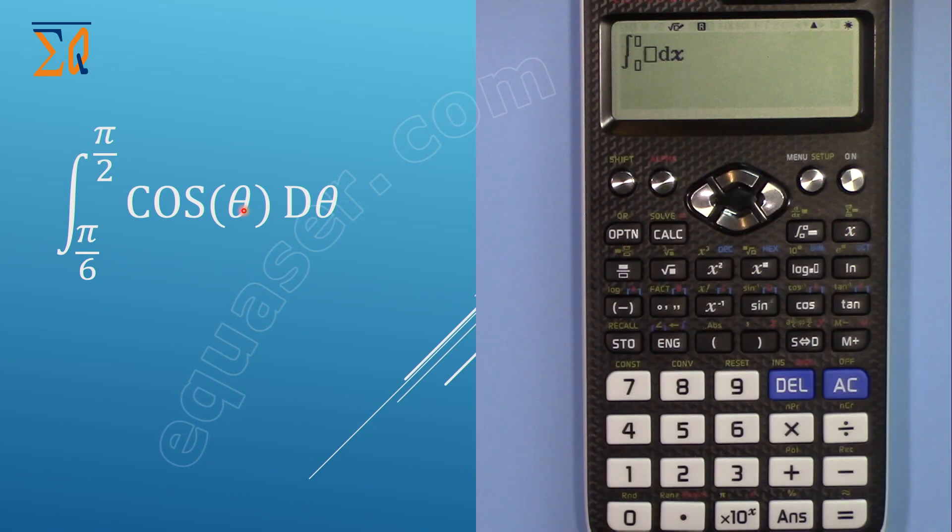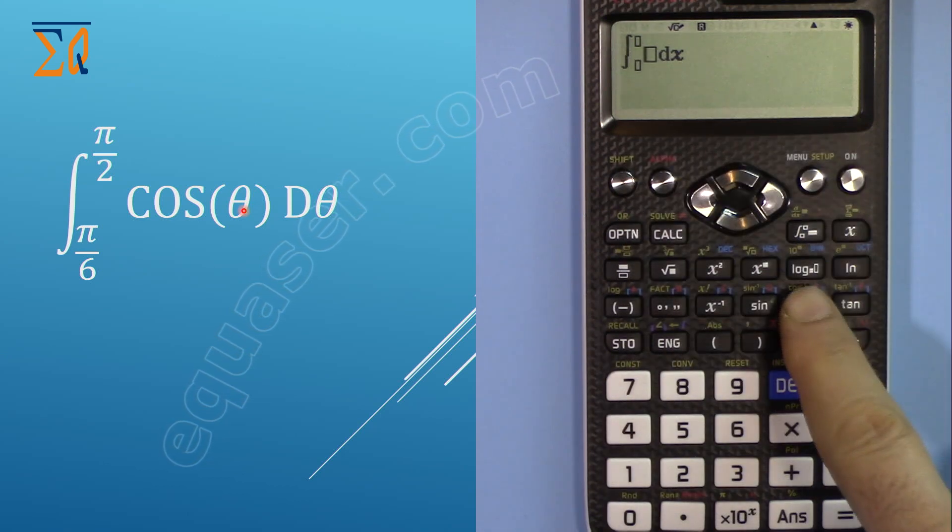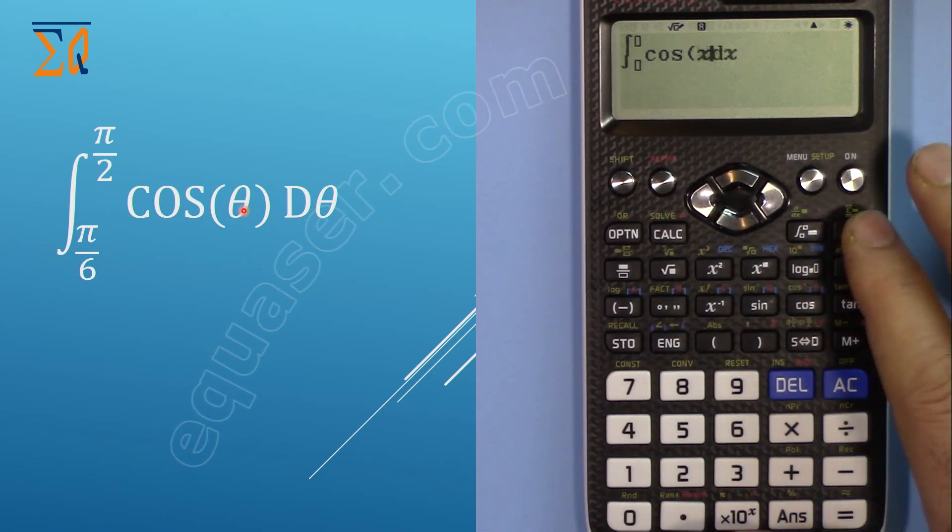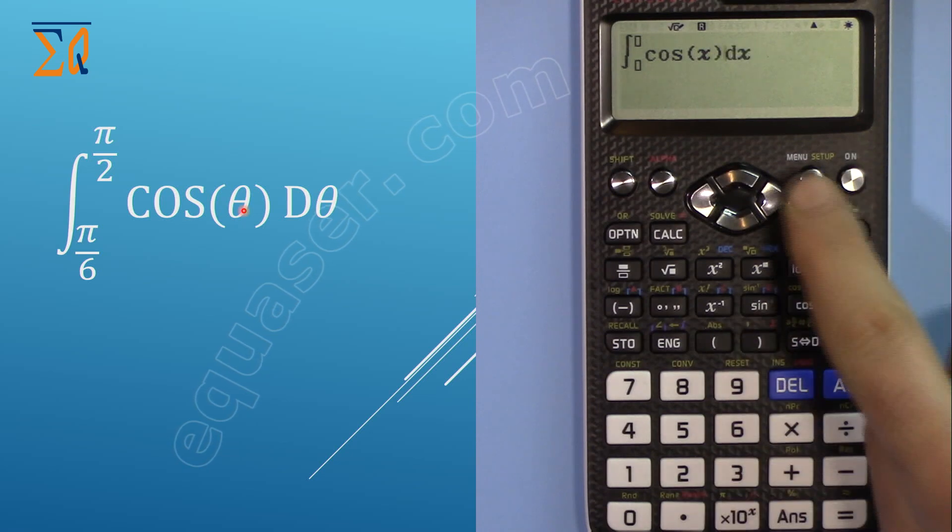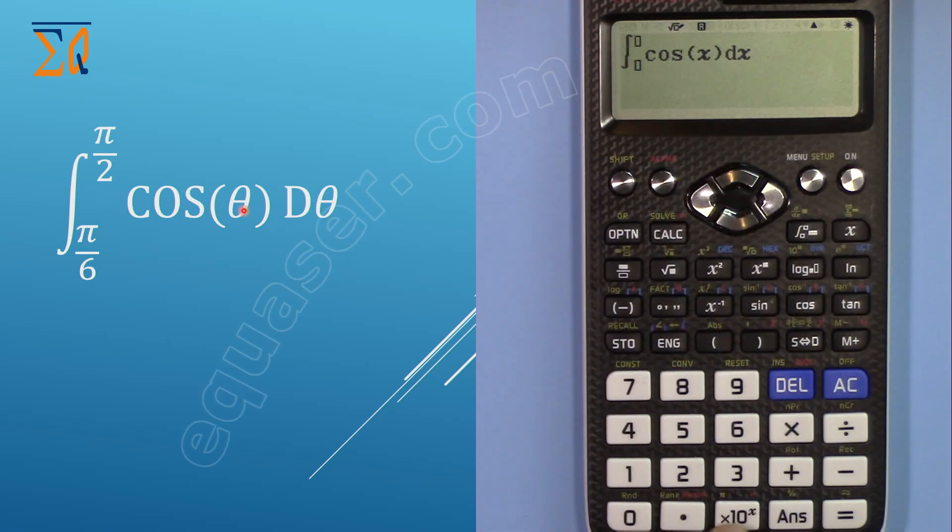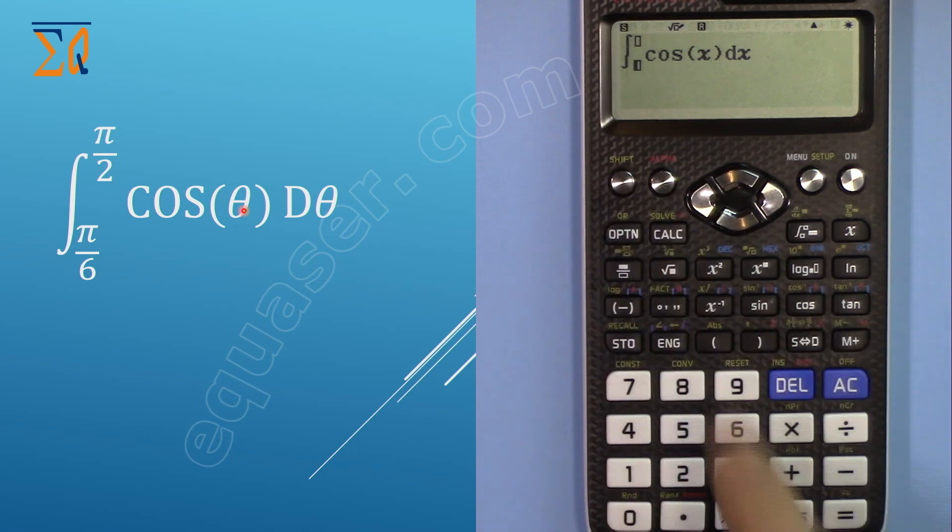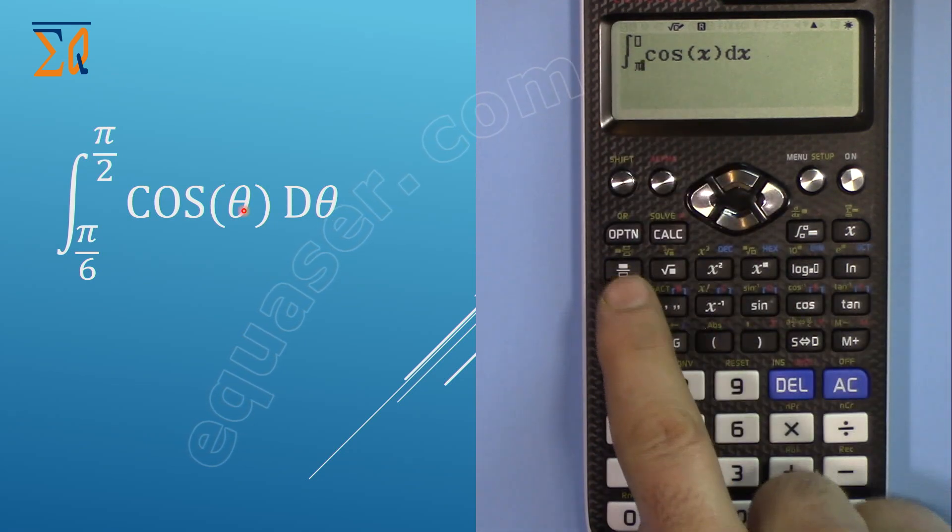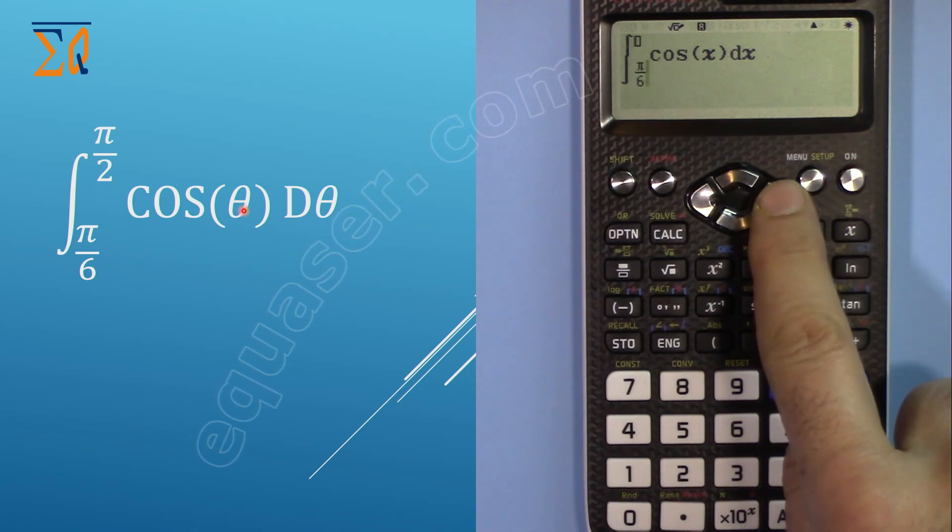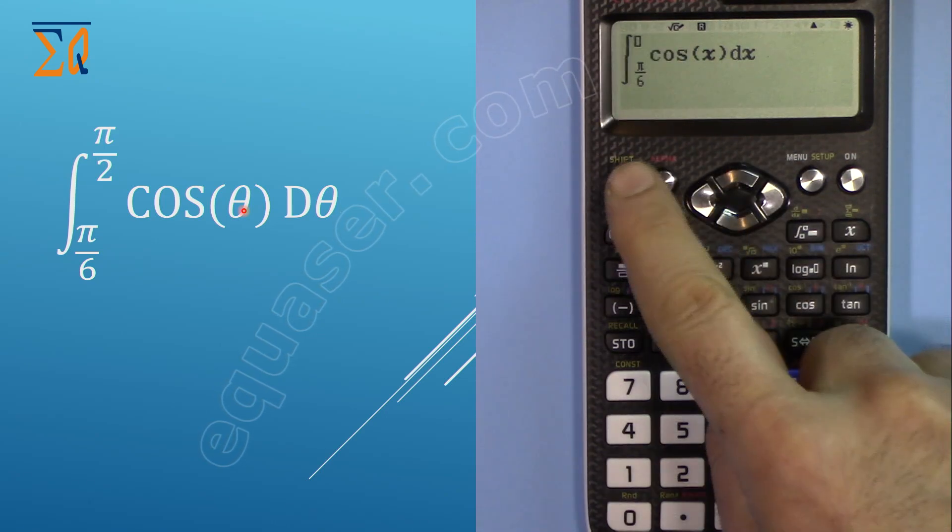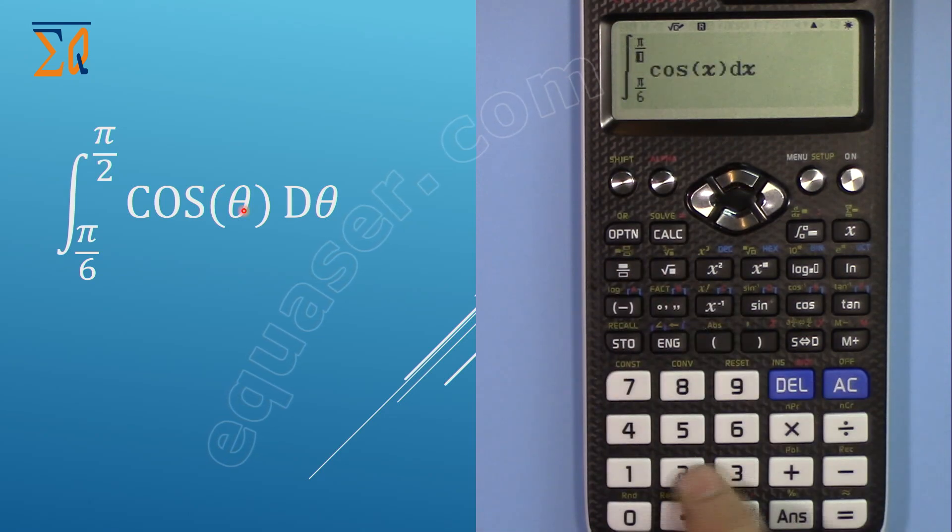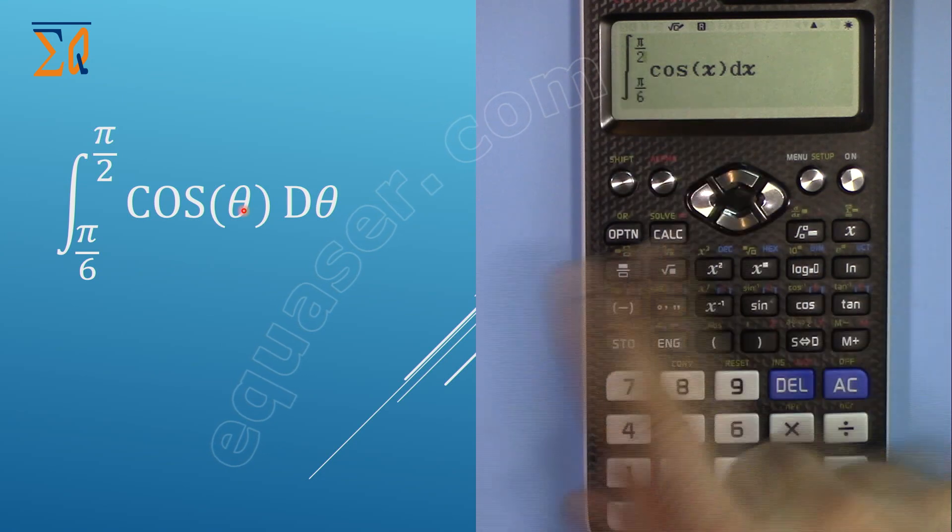The screen will be cleared. Press cosine, then cosine of theta. This calculator doesn't have theta, so we will use X. Close the parenthesis and move the arrow to the right to come to the lower bound. For π/6, press Shift and this button for π, then the over button and 6. Move to the right again for the upper bound. Shift, π, then over 2. Exactly like a textbook.